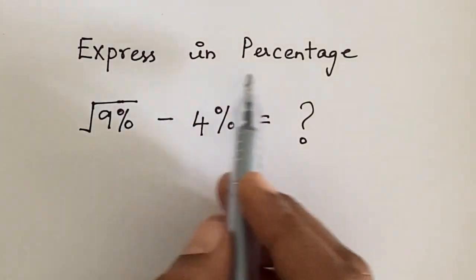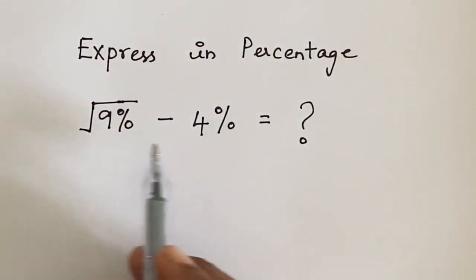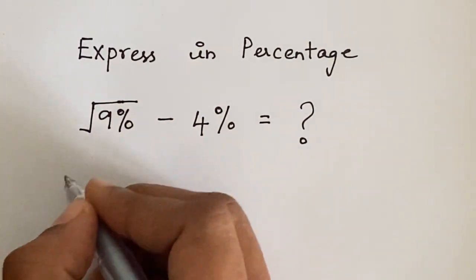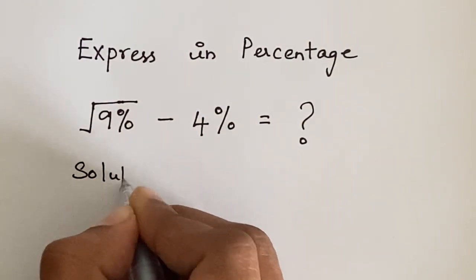Friends, let's solve this nice problem. Expressing in percentage, what is square root of 9 percentage minus 4 percentage? Let's see the solution for this.